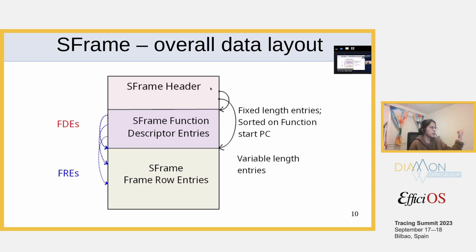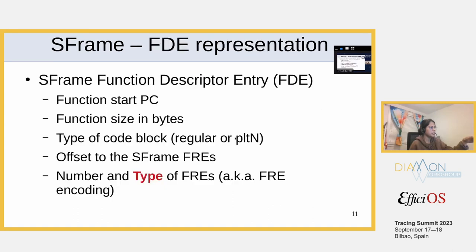The SFrame header includes the magic number, version number, and offsets so that when you land at the SFrame section you know which bytes to read to find the function descriptor entries, and another offset to reach the frame row entries. Information access is via offsets. FDEs are fixed-length entries sorted on start PC. A function descriptor entry contains the function start PC, size of the function in bytes, and what kind of code block it represents — regular or PLT entry.